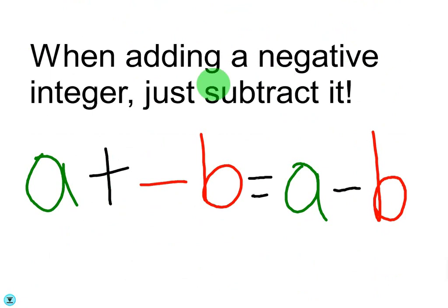When adding a negative integer, just subtract it. So the rule is a plus negative b equals a minus b. For example, 5 plus negative 9 is 5 minus 9. 6 plus negative 7 is 6 minus 7.